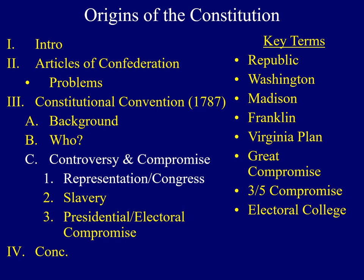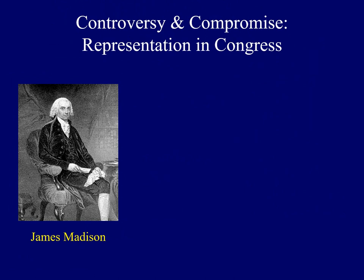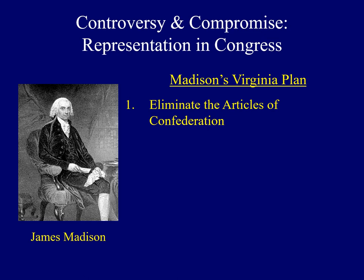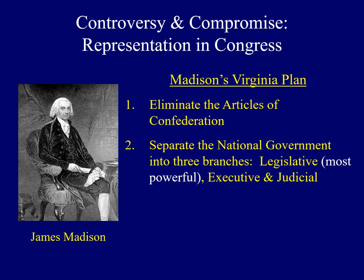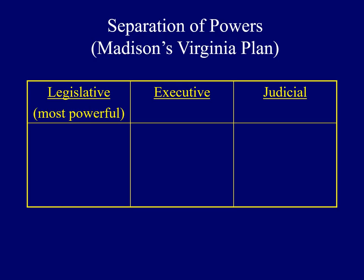Next, we'll explore some of the controversies and how they were resolved through compromise at the Constitutional Convention. The first dealt with how each state would be represented in Congress. Madison's Virginia Plan set the stage for one of the first controversies. Interestingly, the first two provisions were actually accepted by everyone. First, he called for the elimination of the Articles of Confederation — he said there were so many problems they had to start from scratch, and that was accepted. Secondly, he argued that the national government should be divided into three branches: the legislative, executive, and judicial. Here we see a visual representation of this separation of powers.